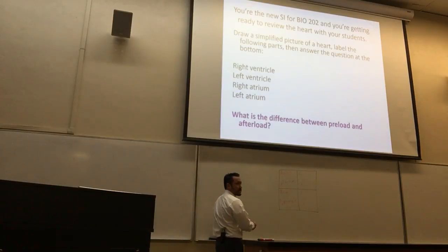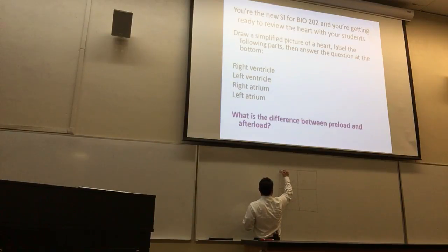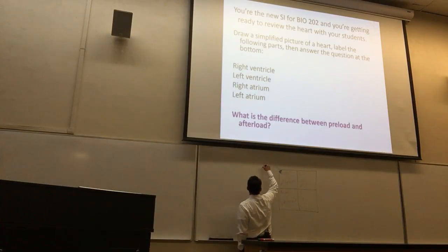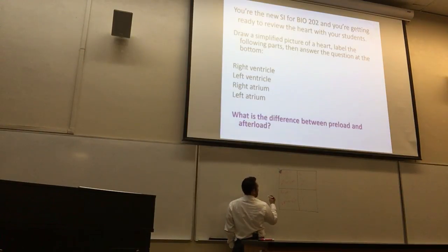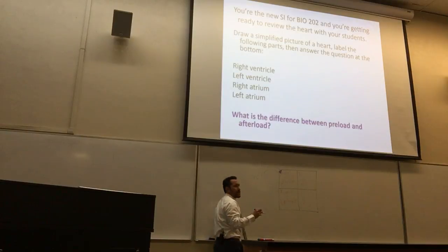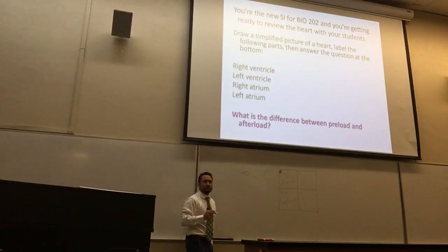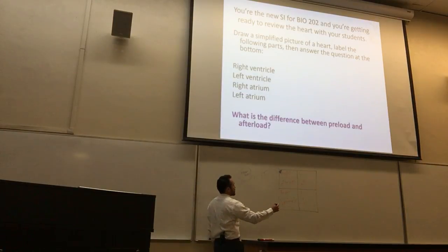Let's start on the right atrium. The blood comes into the right atrium, correct. Where does it come into the right atrium from? Superior vena cava. So we have from the superior vena cava and inferior vena cava, and it goes into the right atrium — this is from the body. Then it flows from the right atrium to where?